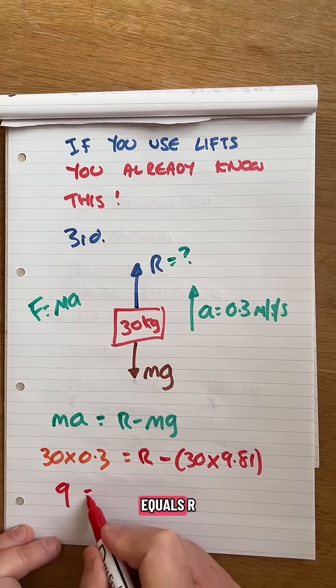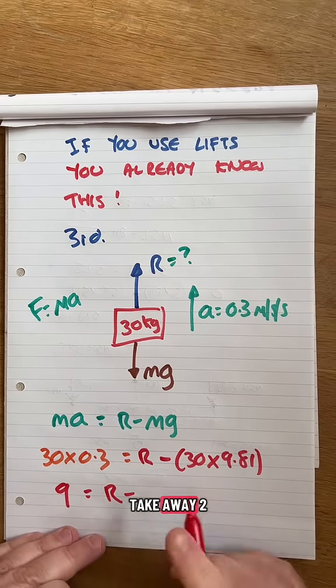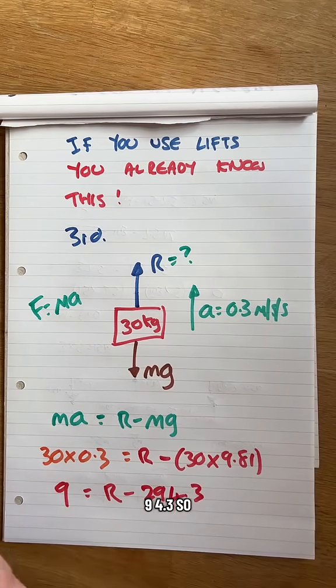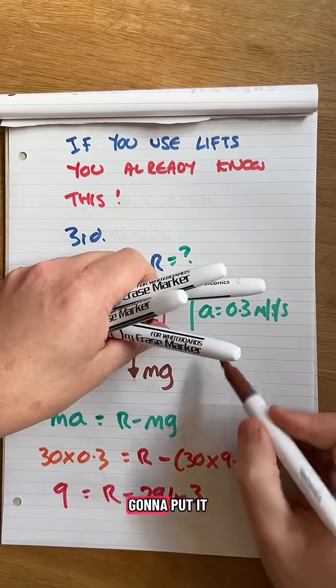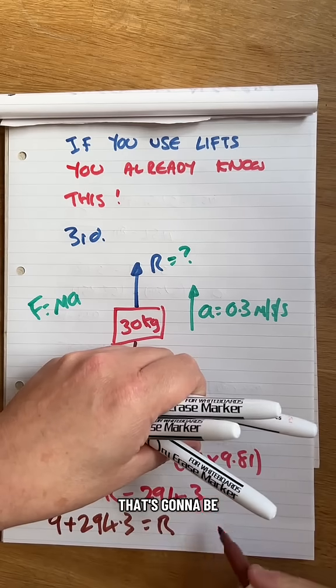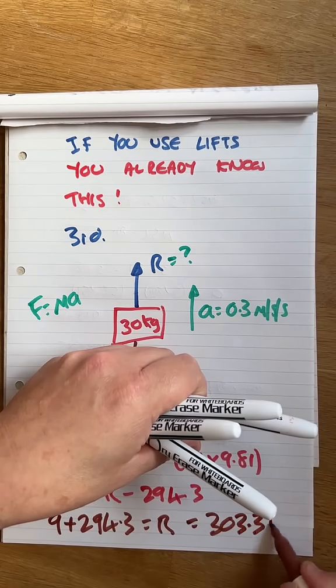That gives you 9 equals R take away 294.3. So work that out. I'll do it up here. 9 plus 294.3 will give me the reaction or the force coming up. That's going to be 303.3 newtons.